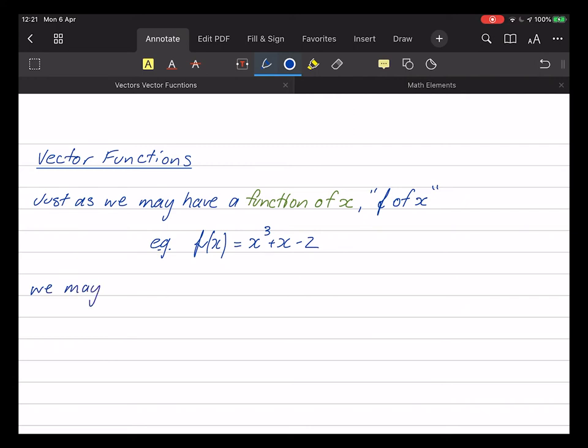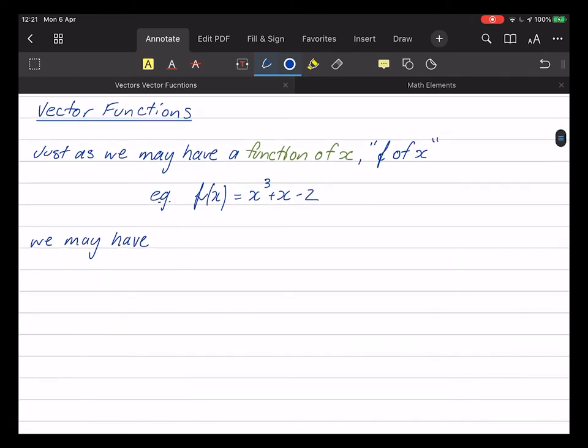We may have a vector function of x, and if I had such a thing, not that it's the best idea, you read that as r of x. So for example, and if I follow the same sort of notation, it would be x cubed in the i direction, x in the j direction, minus 2 in the k direction.